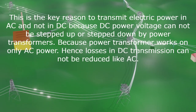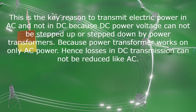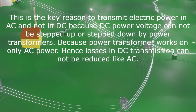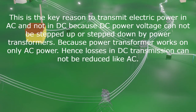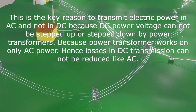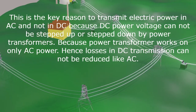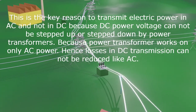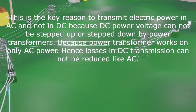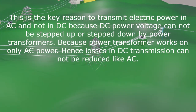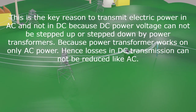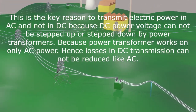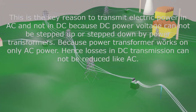This is the key reason to transmit electric power in AC and not in DC, because DC power voltage cannot be stepped up or stepped down by power transformers. Power transformers work only on AC power, hence losses in DC transmission cannot be reduced the same way as in AC.